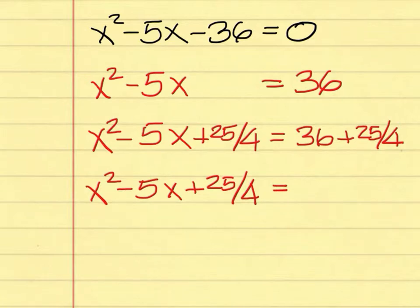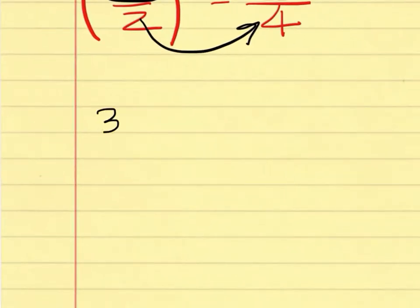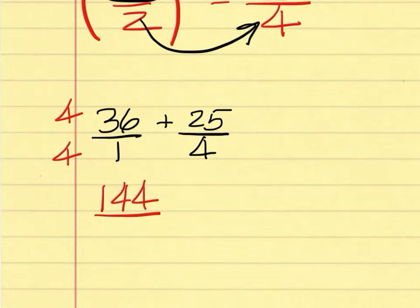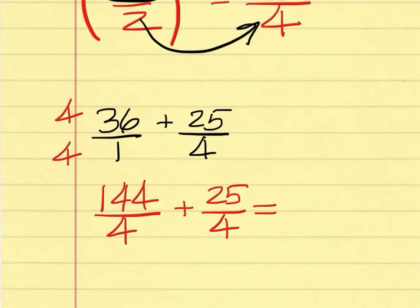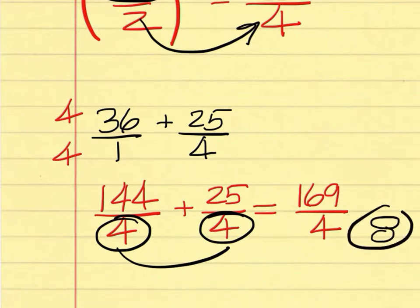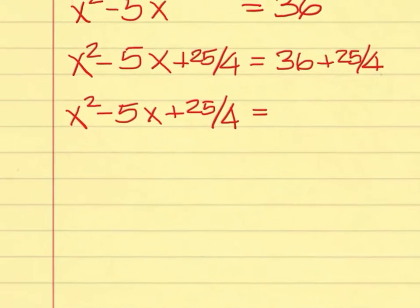36 plus 25 over 4 — to get a common denominator of 4, you multiply the top and bottom of 36 by 4. 36 times 4 is 144, giving you 144 over 4. 25 over 4 stays the same. 144 plus 25 is 169 over 4. When you add fractions with like denominators, you do not add the denominators — it stays 4. So the right-hand side is 169 over 4.